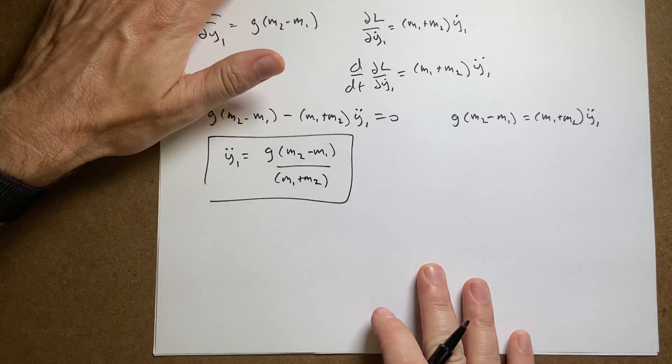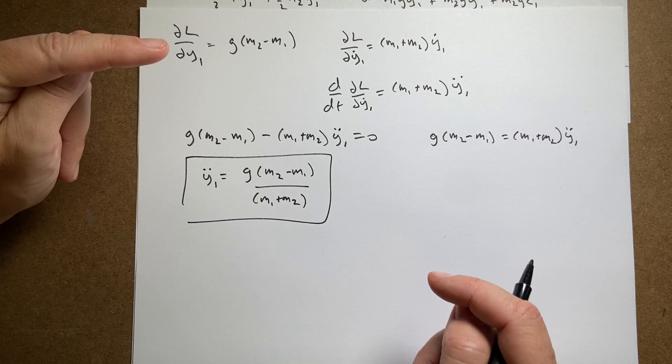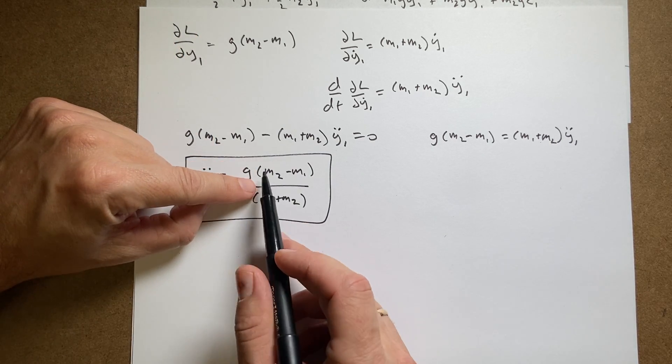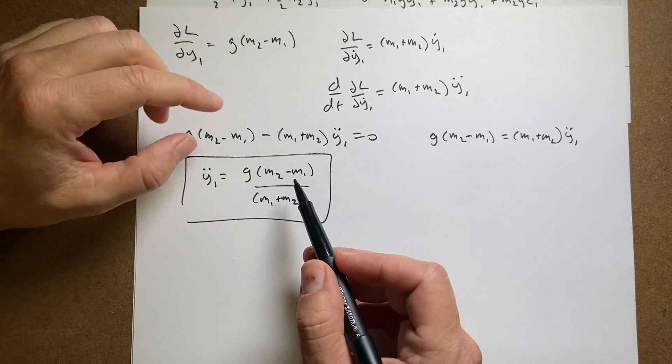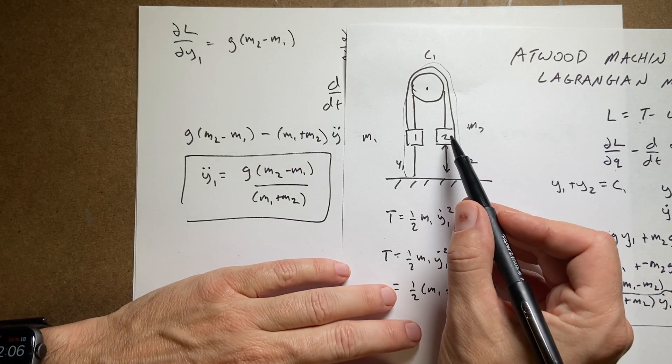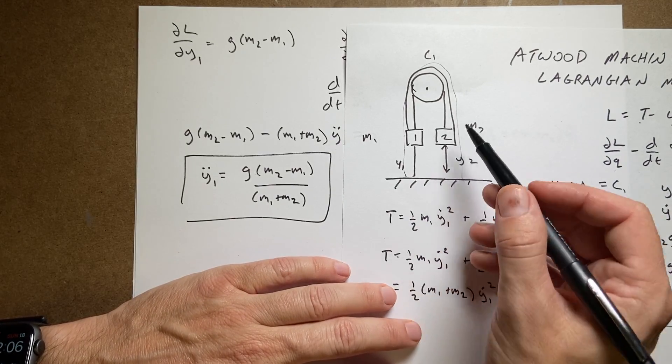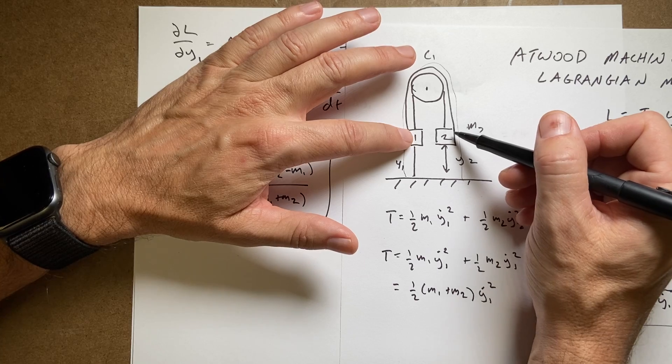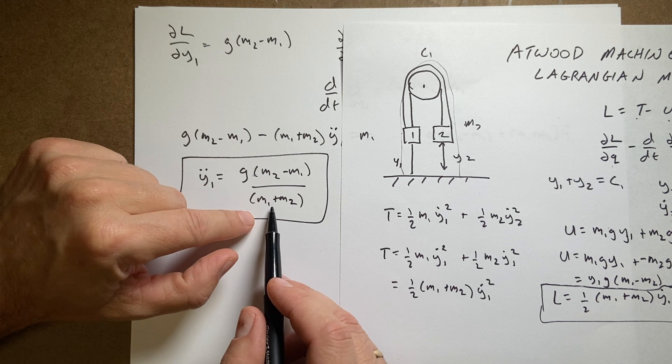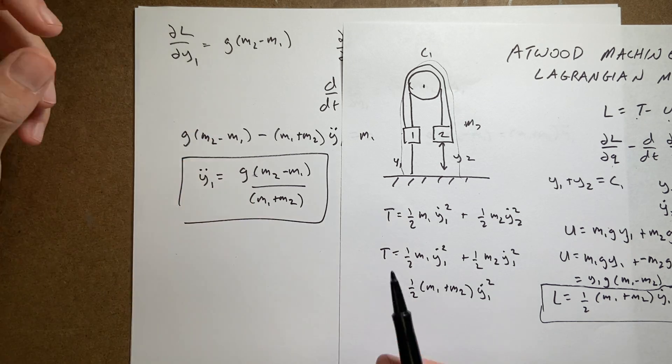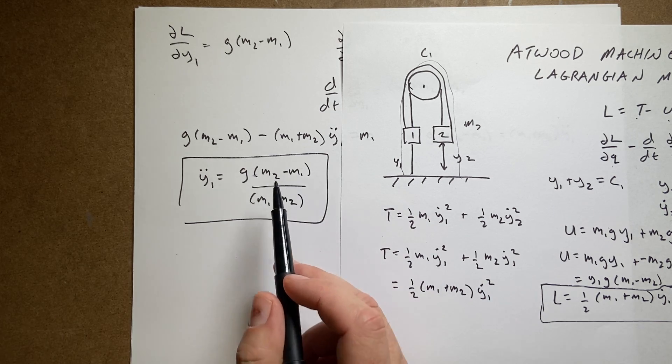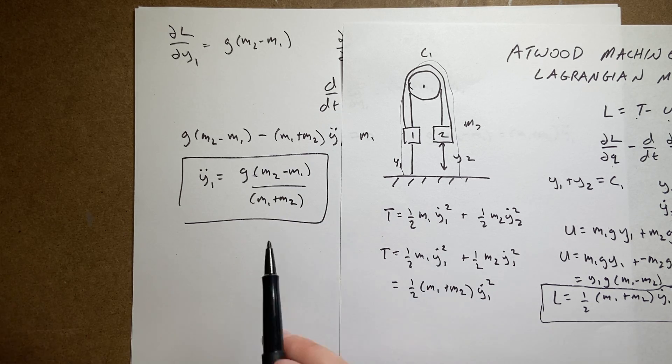Okay, let's check that solution. Does it make sense? Does it have the right units? This has units of meters per second squared and then I have kilograms divided by kilograms. Check. Okay, what if I take this and m2 is very, very, very large compared to m1. In that case, m1 shouldn't really do anything and the acceleration should be g. So if m2 is large, then this is just going to be m2 and this is just going to be m2 and they cancel and I get g. So that's good. What if m2 equals m1? The acceleration should be zero and so I get zero there. That's good. Okay, so it does work and it is constant acceleration.